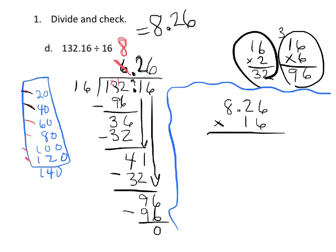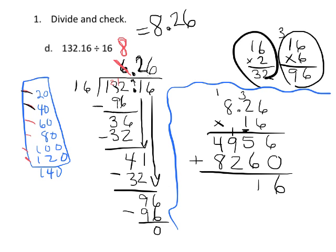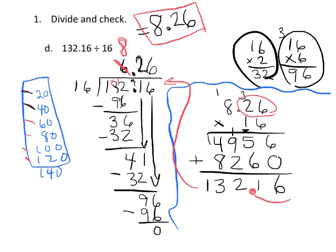Let's do that. So 6 times 6 is 36; 6 times 2 is 12 plus 3 is 15, carry the 1; 6 times 8 is 48 plus 1 is 49. I'm going to put a 0 because I'm multiplying by 10. Then 1 times 6 is 6, 1 times 2 is 2, 1 times 8 is 8. Now we're free to add. I get 13,216, but I have to remember I had two decimal places, so my answer is going to be 132.16, and that's exactly what our original dividend was. So we know that our answer of 8.26 is probably correct.